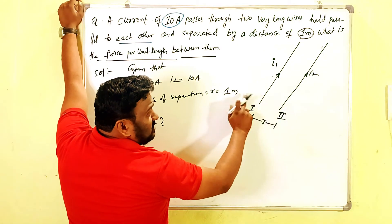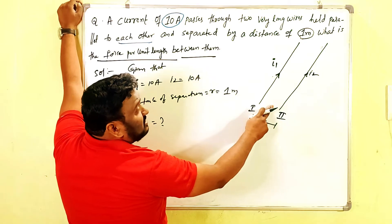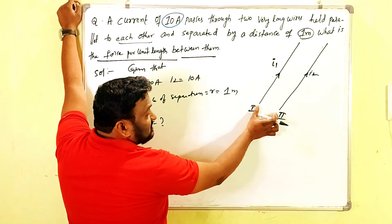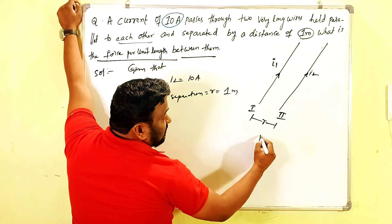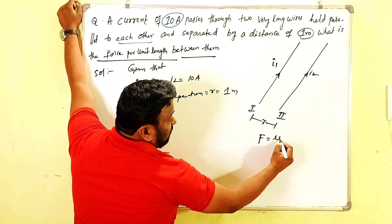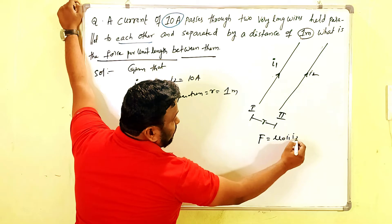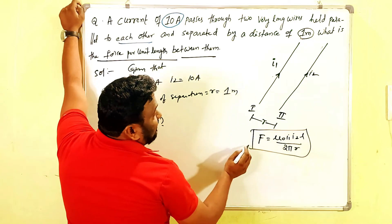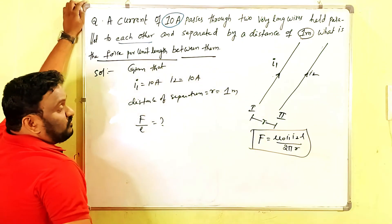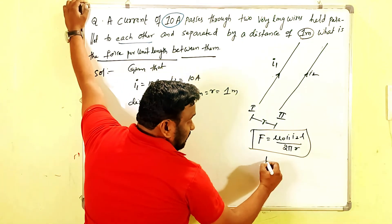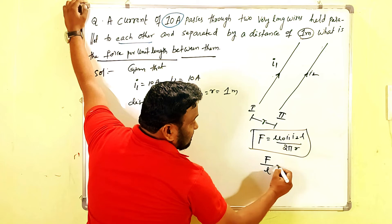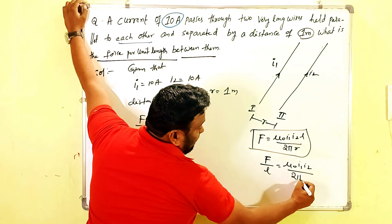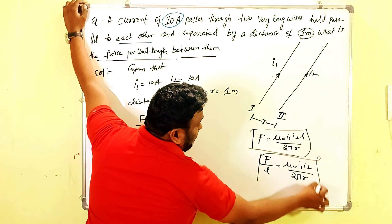When two long straight parallel conductors are having same currents and they are separated by some distance, then the force acting between them is μ₀i₁i₂L/(2πr). This is the force acting between the two conductors. So from this equation, F/L equals μ₀i₁i₂/(2πr). So this is the formula we are going to use.